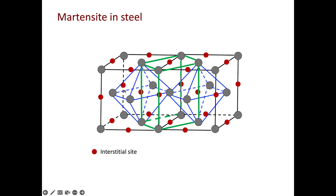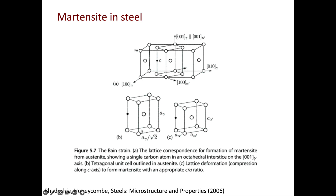Martensitic transformation in steel does not stop here. There is a concept called Bain strain — the tetragonal structure will actually shrink along the vertical direction, also referred to as the C direction. As you can see, carbon atoms sit on the C-axis of the tetragonal unit cell. Therefore, the final C dimension depends on how much carbon you have in the material. In other words, the C/A ratio of your martensite depends on the carbon content in the steel.